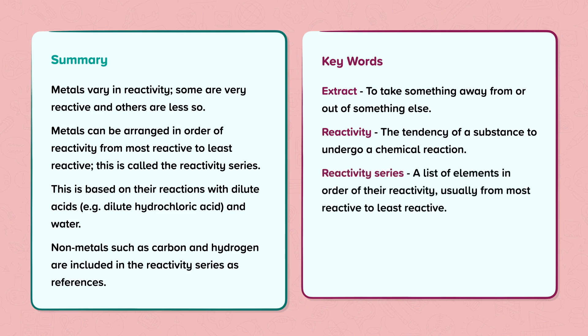Reactivity series - A list of elements in order of their reactivity, usually from most reactive to least reactive. Unreactive - A substance is unreactive or inert if it does not easily take part in chemical reactions.